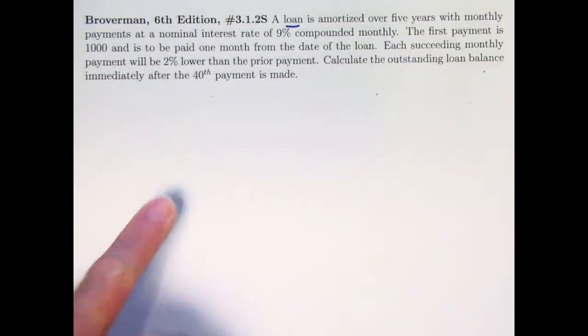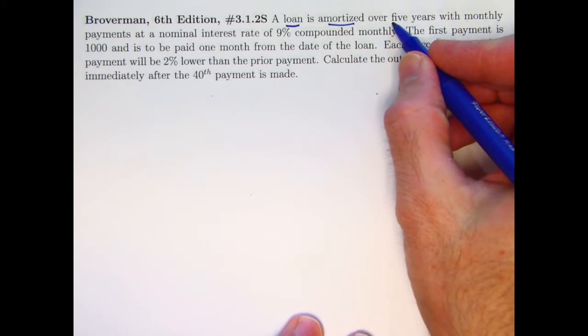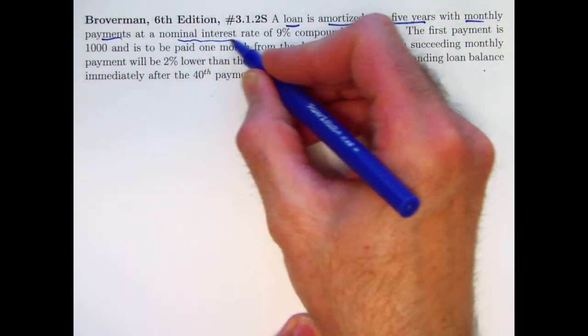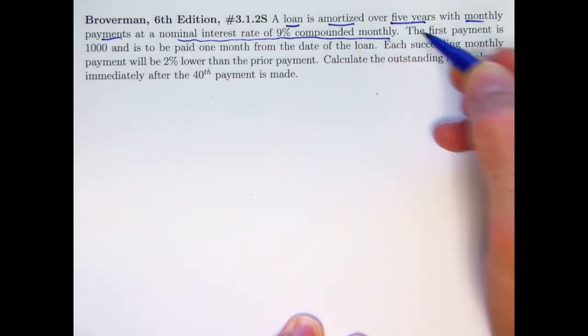So we have a loan. In other words, say the bank is giving you some money to, for example, buy a car. You're borrowing that money, you need to pay it back. It's an amortized loan. You're paying it back with a sequence of payments over time. In this case, it's over five years with monthly payments at a nominal interest rate of 9% compounded monthly.